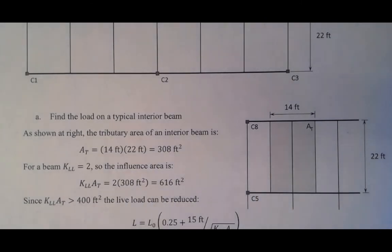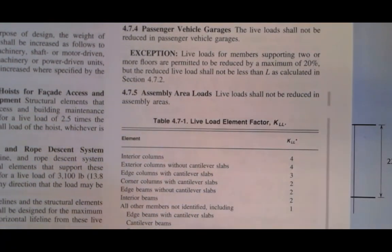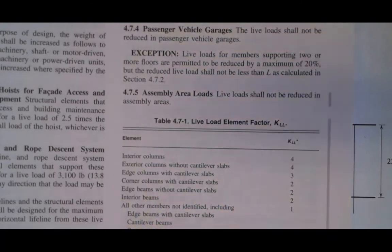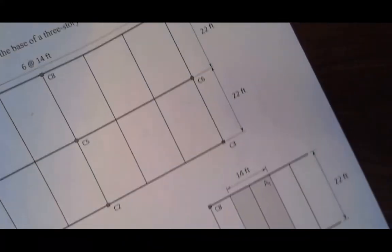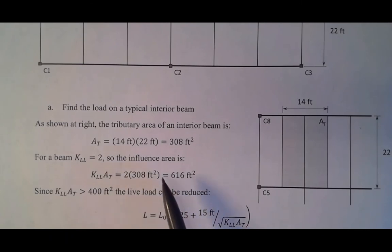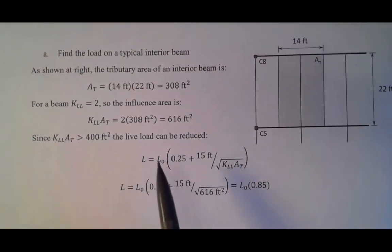Now I need to figure out what the influence area is, and so if you go into ASCE 7, it's this table right here, table 4.7-1, it's on page 17. And so again, I look at the different types of members. This is an interior beam, and so K_LL is 2. So that's where this came from, that came from that table. You do that, it's 616 square feet. Now you can see that's greater than 400 square feet, so I can reduce the live load.